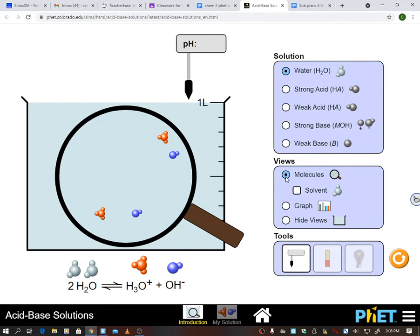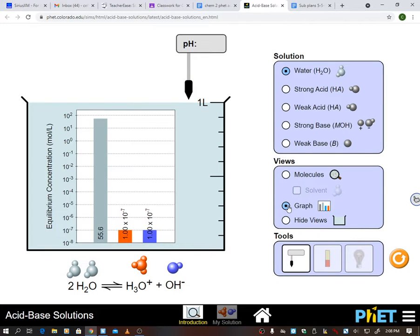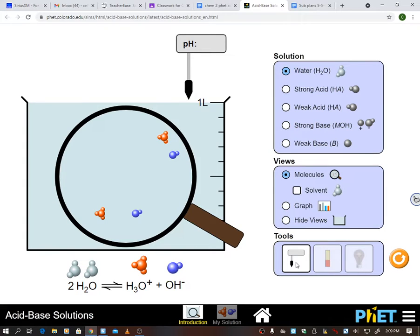So here are my views, which I can go into graph mode like that. I'm going to leave that alone for right now. But here are my tools. My first tool that I'm on right now is this pH meter. So I stick it in here and it tells me what the pH of this liquid is. Okay, so I can take that out.